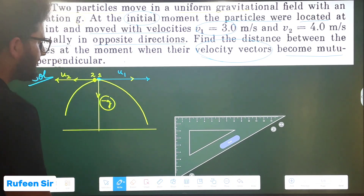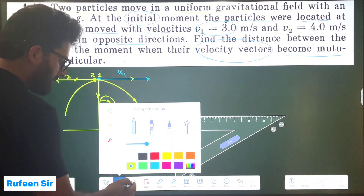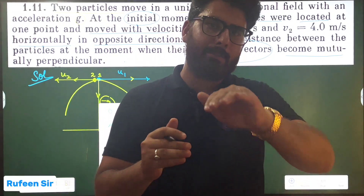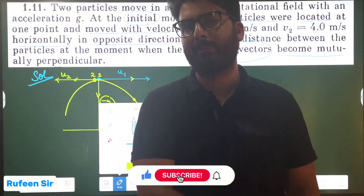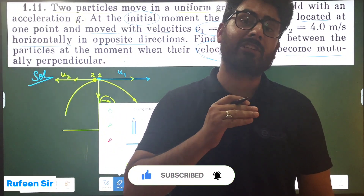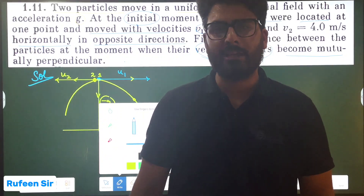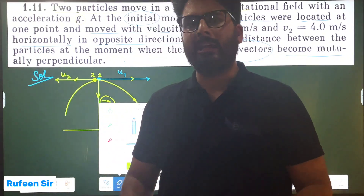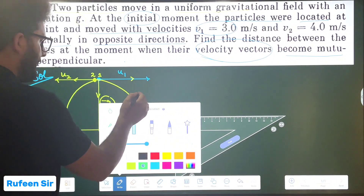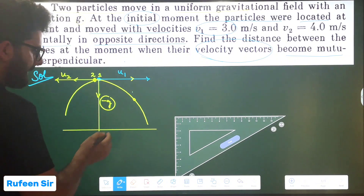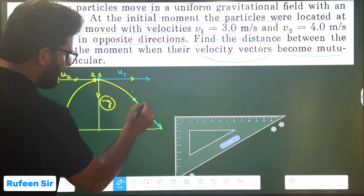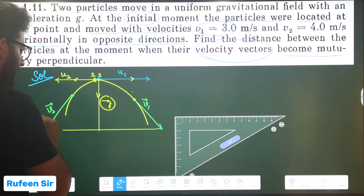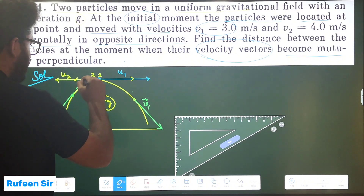This is particle 1 and this is particle 2 — both particles have vertical acceleration of minus g. After some time, the direction of motion of a particle at any point on its trajectory is along the tangent to the trajectory at that point. You draw a tangent at that point on the trajectory, whether it is a straight line or a circle. The velocity is always tangential.